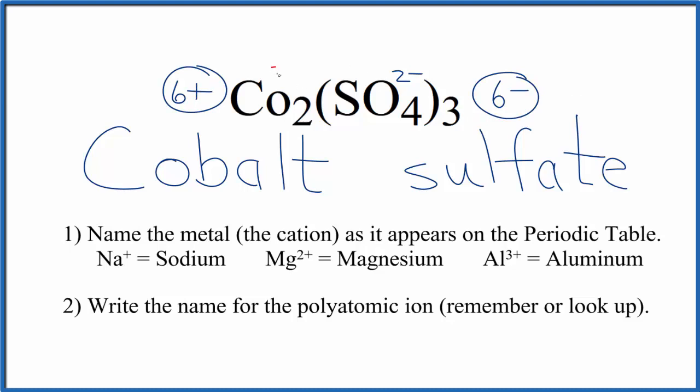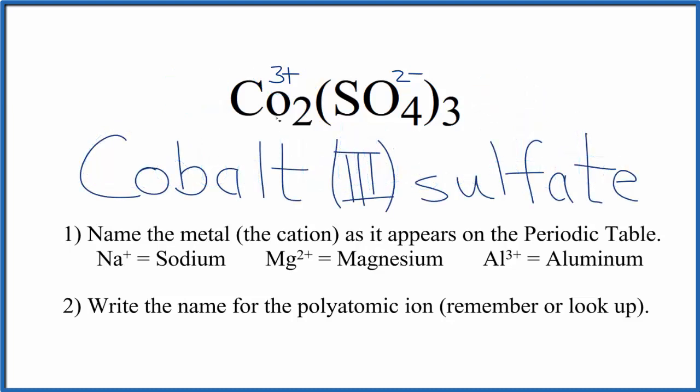2 times 3+ gives us 6+. So we'll write Roman numeral III in parentheses between the names to show this 3+ charge. Therefore, the name for Co₂(SO₄)₃ is cobalt(III) sulfate, and this Roman numeral III comes from the 3+ charge.